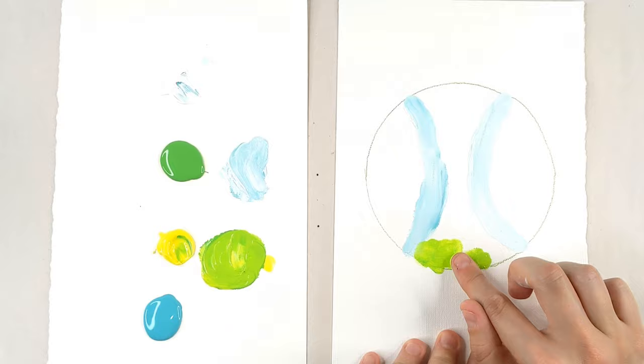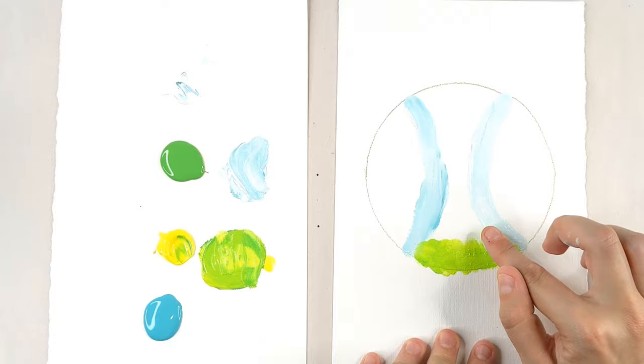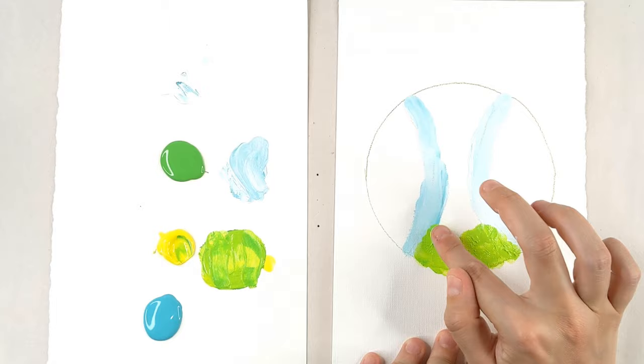But using this tapping motion, we're going to get that kind of fuzziness that you would see on a tennis ball. And you want to make sure that you leave a little bit of that blue line, that white blue line, but you can cover a lot of it up. We're just going to tap that in, like so.